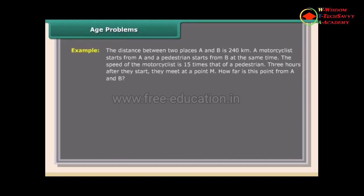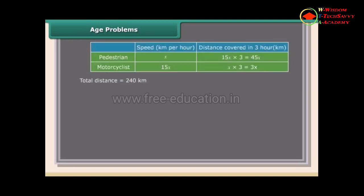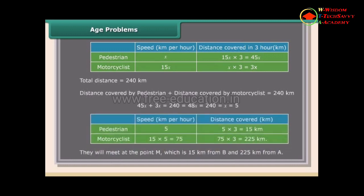Distance problem: The distance between places A and B is 240 km. A motorcyclist starts from A and a pedestrian starts from B at the same time. The speed of the motorcyclist is 15 times that of the pedestrian. They meet after 3 hours at point M. Let the pedestrian's speed be X km/h. Distance covered by pedestrian + motorcyclist = 240, so 3X + 45X = 240, giving 48X = 240, X = 5. Point M is 15 km from B and 225 km from A.